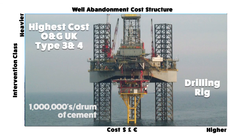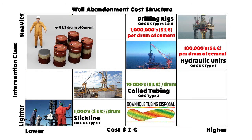Fortunately, our method of downhole tubing disposal uses conventional slickline and coil tubing to remove the tubing from within the casing and meet the new guidelines, spending thousands and tens of thousands per drum of abandonment cement using slickline, coil tubing and pumps — instead of spending hundreds of thousands and millions per drum of abandonment cement to use a hydraulic workover or drilling rig.